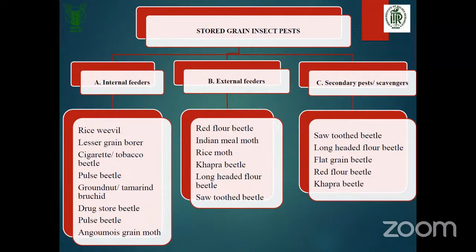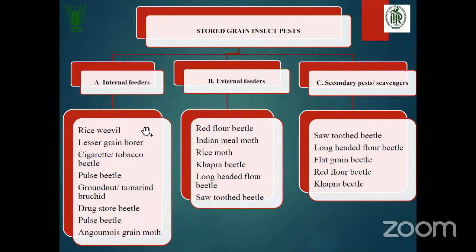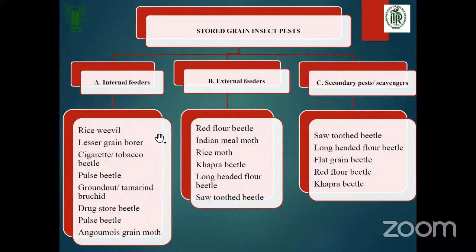Stored grain insects are classified in two ways: as internal feeders or external feeders, and as primary or secondary storage pests. There are ready-made tables available in books to classify storage pests as internal/external and primary/secondary feeders. This is a very important slide — you can use it to classify pests in both ways.